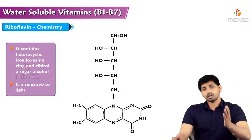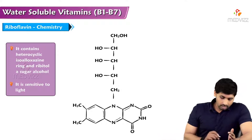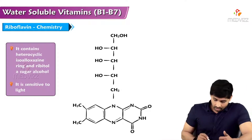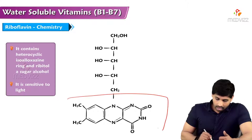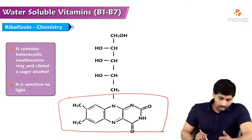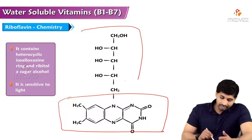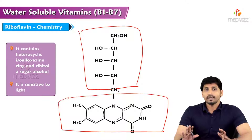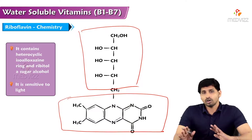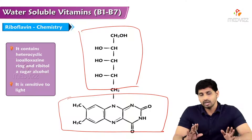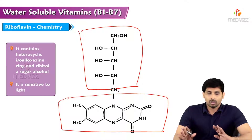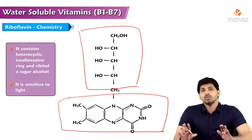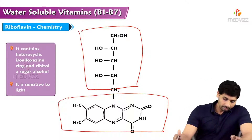Coming to talk about the structure of riboflavin, it contains a heterocyclic isoalloxazine ring attached to an alcohol that is ribitol. Ribitol is the alcohol form of a carbohydrate — ribose is an aldehyde, and ribitol is an alcohol. When ribose undergoes reduction, it is converted to the alcohol form, that is ribitol.